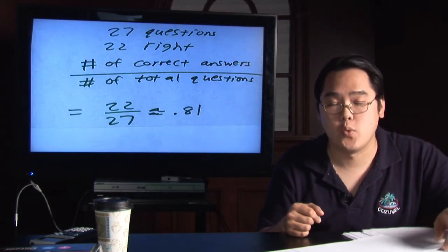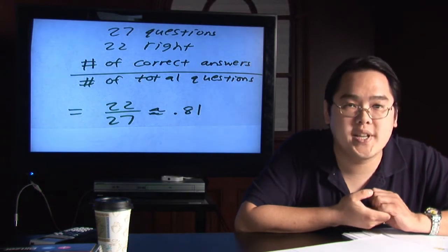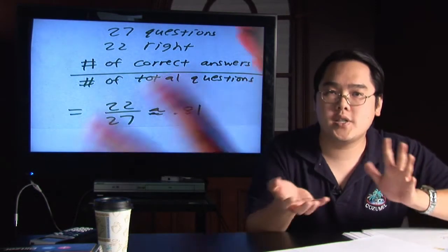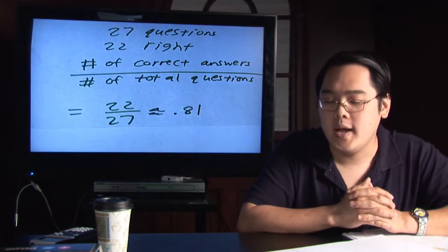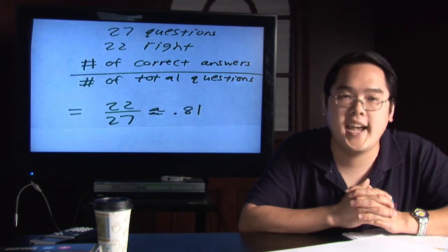And so basically, if you want, you can use a calculator to figure it out for you. 22 over 27, round to let's just say two decimal places to keep things simple and you'll find out that 22 over 27 is approximately .81.